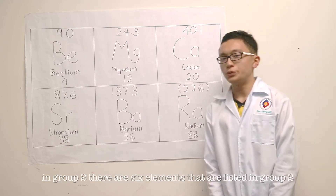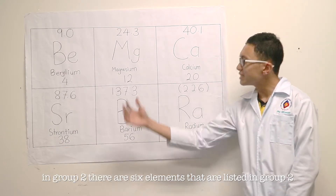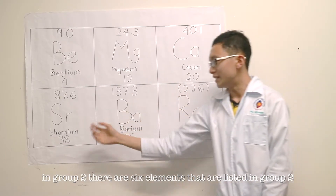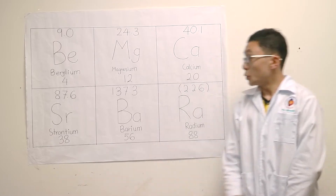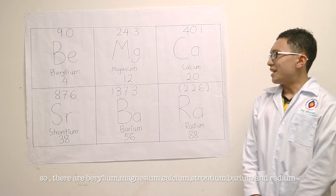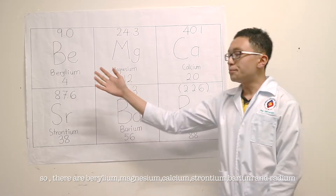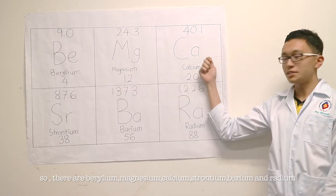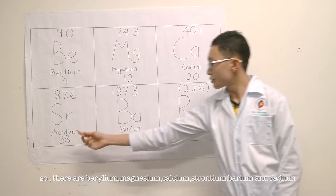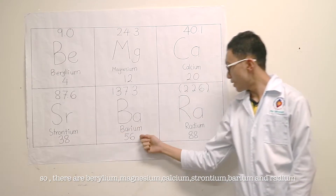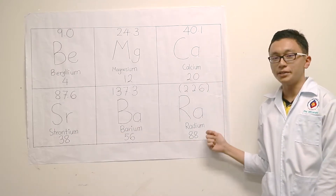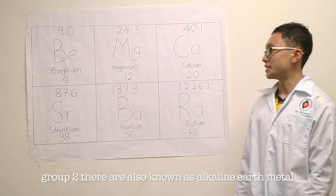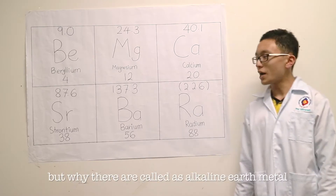In group 2, there are 6 elements: beryllium, magnesium, calcium, strontium, barium, and radium. They are also known as alkaline earth metals.